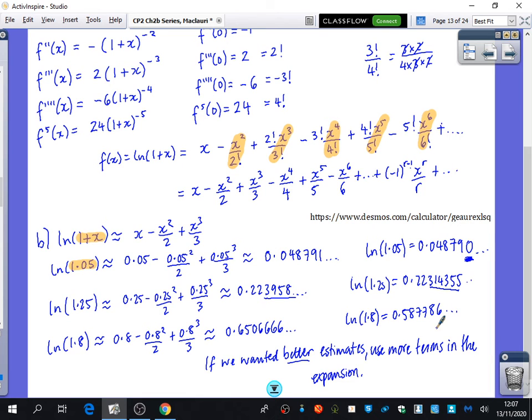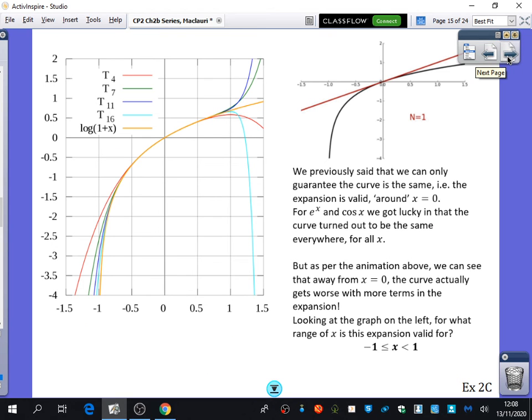So the next page is just a summary of what we were talking about. You've got some of it in your notes already. I've got ln(1+x) drawn in orange. We've seen the visual representations of this. The red line is with four terms, then seven terms, 11 terms, and 16 terms for those colors respectively. You can see that after 1, the branches are going drastically away from it. It's the same as what we've just seen on Desmos. We previously said we can only guarantee the curve is the same, i.e., the expansion is valid, around x equals 0. For e^x and cos x, we got lucky in that the curve turned out to be the same everywhere for all of x. But as per the animation above, we can see that if we get away from x equals 0, the curve actually gets worse with more terms in the expansion.